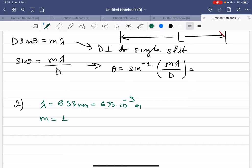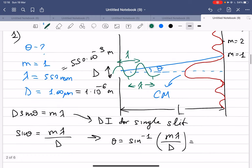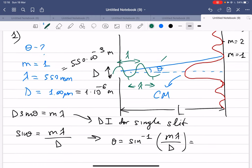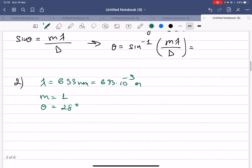So m is equal to 1, and then theta is given which is 28 degrees. Theta is the angle of this one, so this one 28 degrees. We have to find the width of the slit.